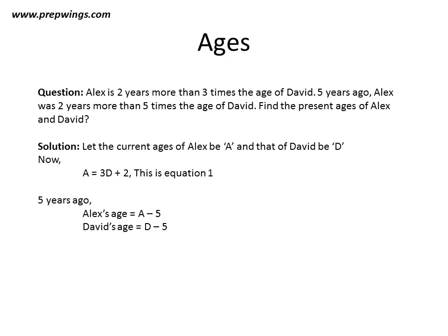Now 5 years ago Alex was A minus 5 years old and David was D minus 5 years old. We have been given a relationship for 5 years ago, wherein it says Alex was 2 years more than 5 times the age of David. That was 5 years ago.